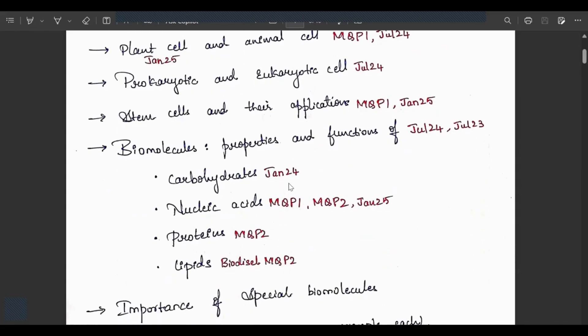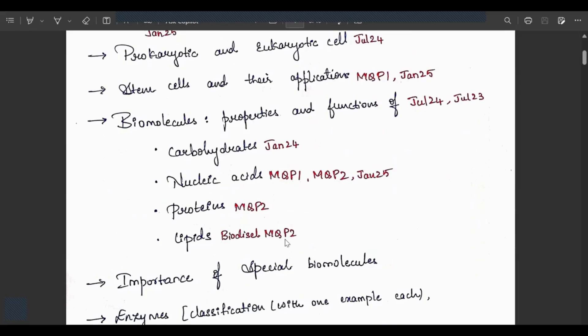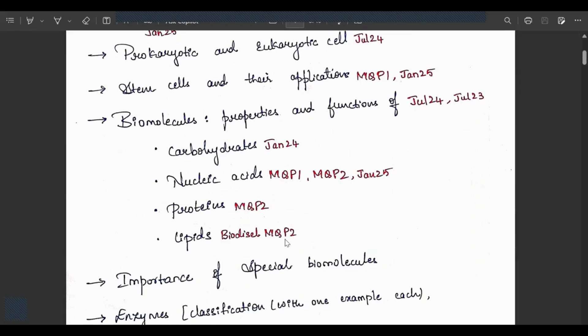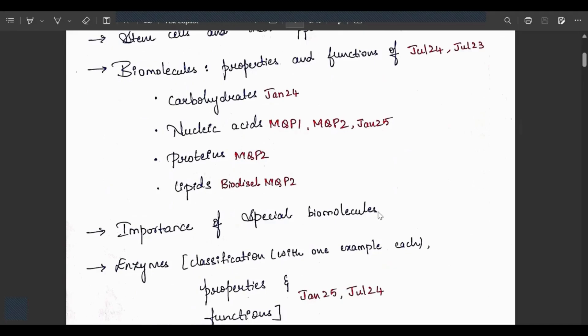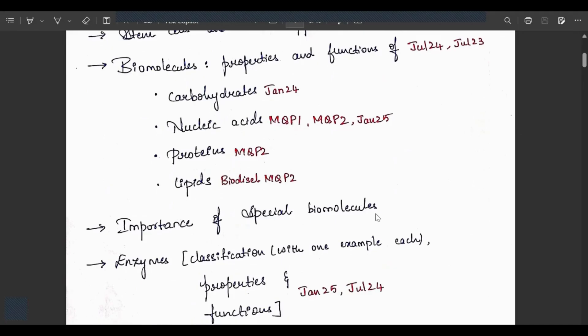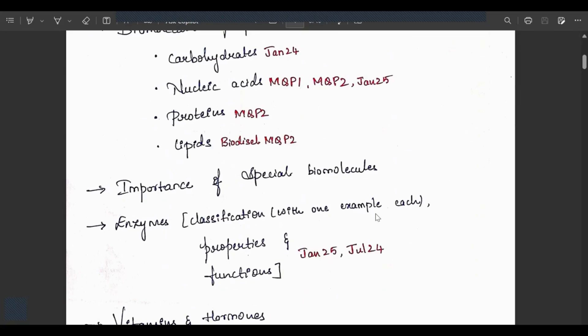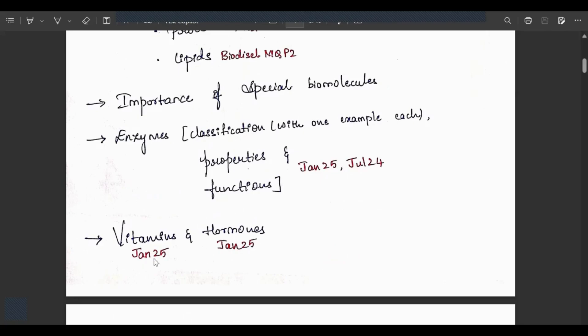Biomolecules: properties and functions asked in July 2024 and July 2023, carbohydrates in January 2024, nucleic acids in model question papers 1, 2 and January 2025, proteins in model question paper 2, lipids asked regarding biodiesel in model question paper 2. Enzymes: classification with one example each, properties and functions asked in January 2025 and July 2024. Vitamins in January 2025 and hormones asked separately in January 2025.